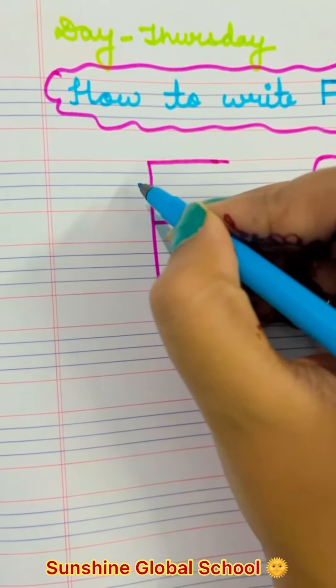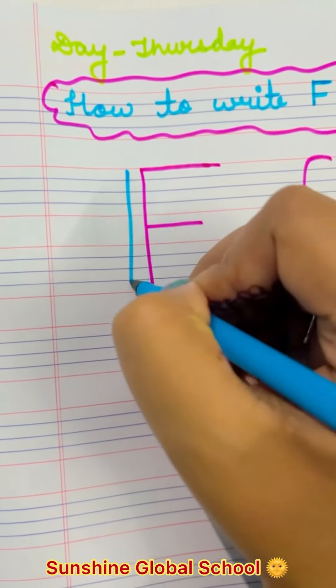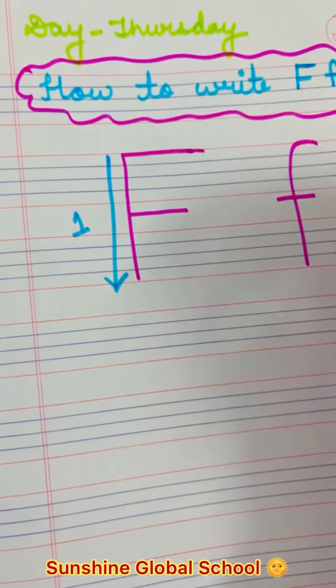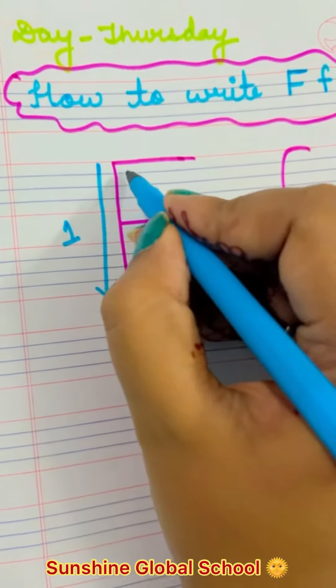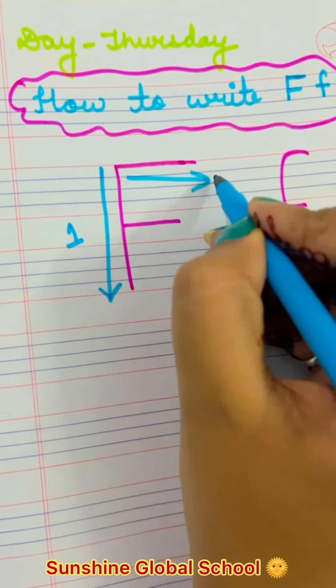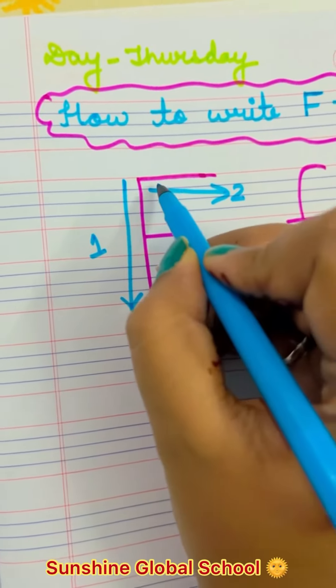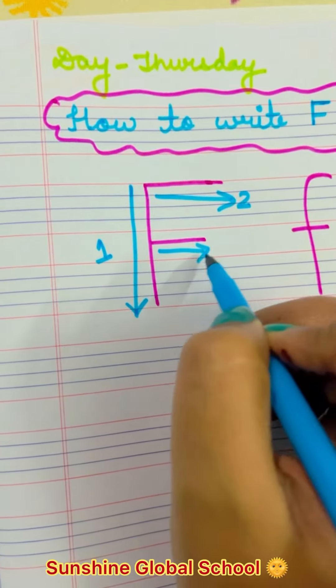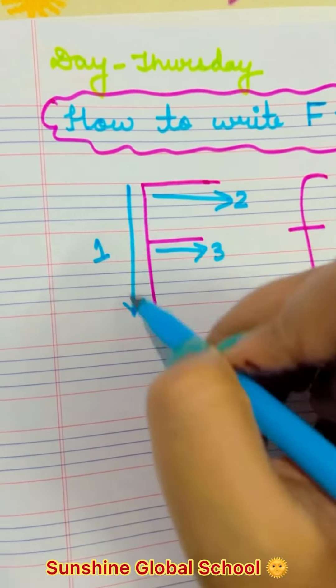Okay, look at here. Step number one, you have to make a standing line, extending line. Second step, you have to make sleeping line, but it should be a bit longer than the third sleeping line in comparison.